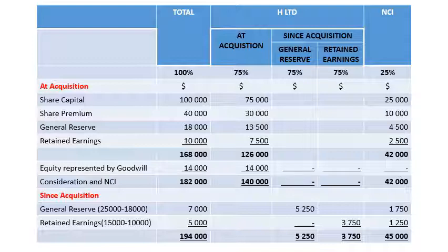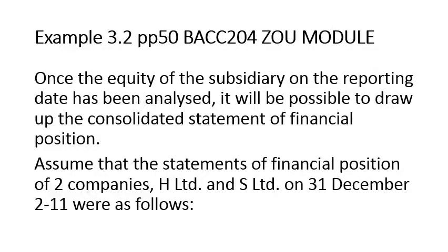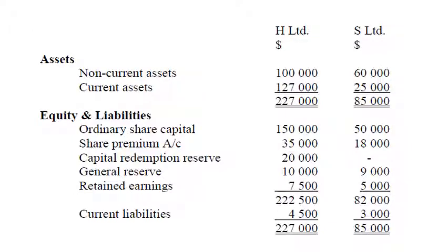That completes the analysis of equity. We now move on to Example 3.2, where we look at three scenarios: first, the subsidiary is acquired at goodwill; second, it is acquired at a gain on bargain purchase — that is, negative goodwill; and third, consolidation after the acquisition date. Let's move on to the balance sheet we are given.